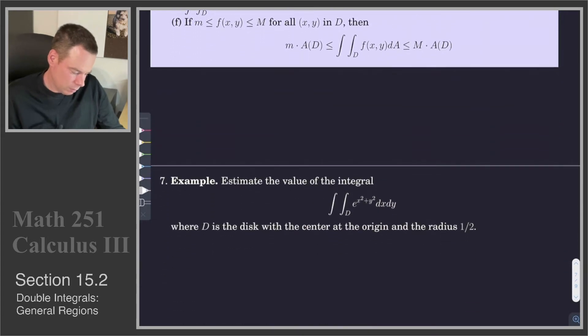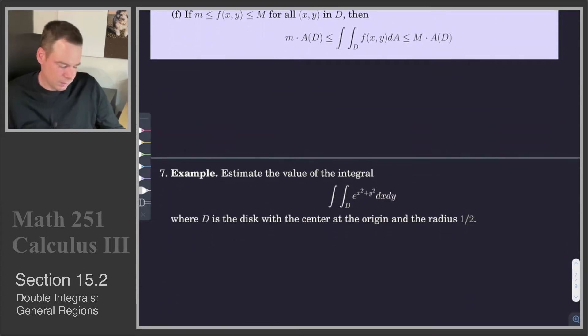This next example, so I'll try to keep it visible up there, says let's estimate the value of this integral where D is the disk with center at the origin and radius a half.